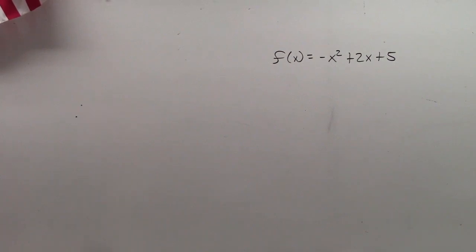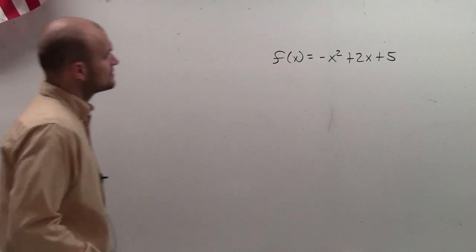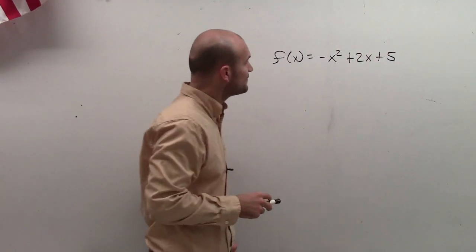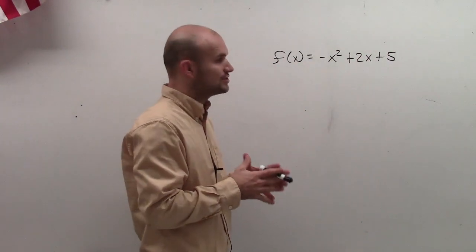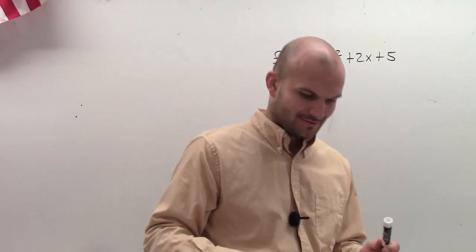Alright, cool stuff. We got sound, and we're all good. We got a tangled cord, but alright. So what I have here, ladies and gentlemen, is f(x) = -x² + 2x + 5.